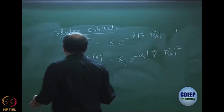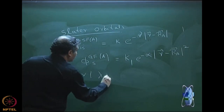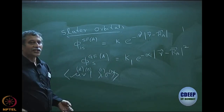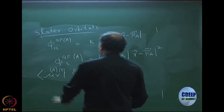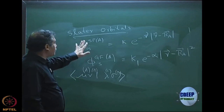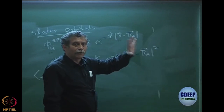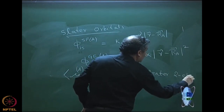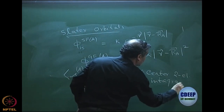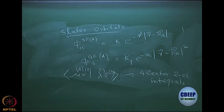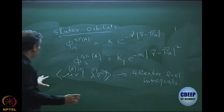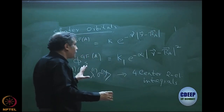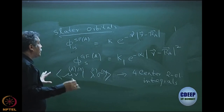The problem with Slater functions is the following. When I calculate the μ, ν, λ, σ integrals, μ can be centered on A, ν on B, λ on C, and σ on D in general in a polyatomic molecule. These are called 4-center 2-electron integrals — each of the four atomic orbitals is centered on a different atom A, B, C, D. These integrals are considerably complex to evaluate because each has a different R_A, R_B, R_C, R_D, making them computationally extremely expensive. That is the reason people did not want to use Slater functions.